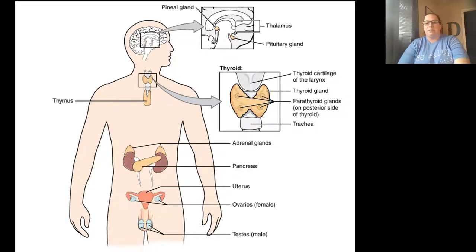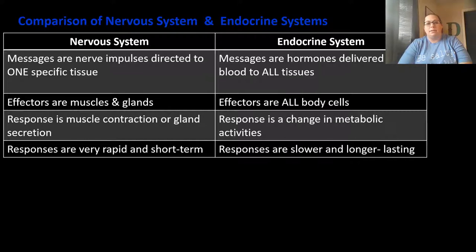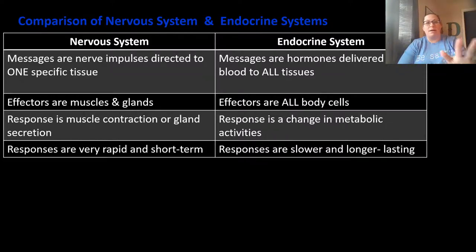Let's do a quick comparison of the nervous system and the endocrine system. The nervous system sends messages through nerve impulses directed to one specific tissue — either muscles or glands — causing contraction or secretion. Responses are fast but short-lived. The endocrine system uses hormones delivered through the bloodstream to all tissues, but only cells with receptors respond. Effectors can be any body cell with the appropriate receptor.